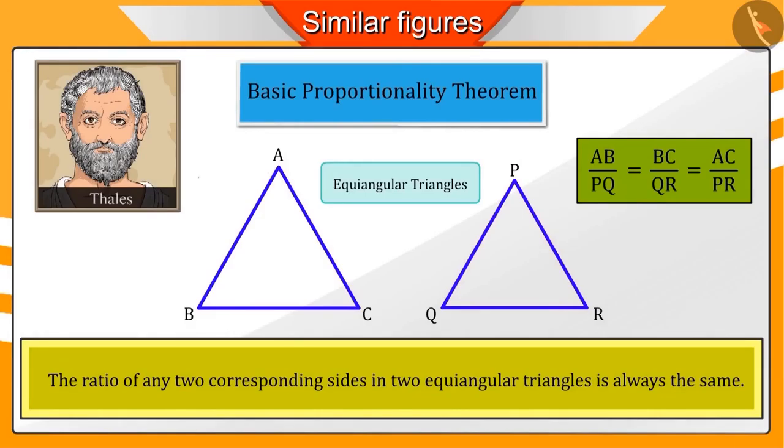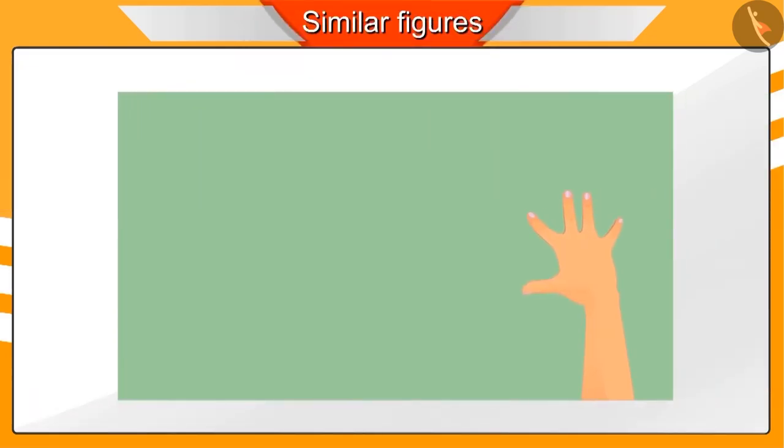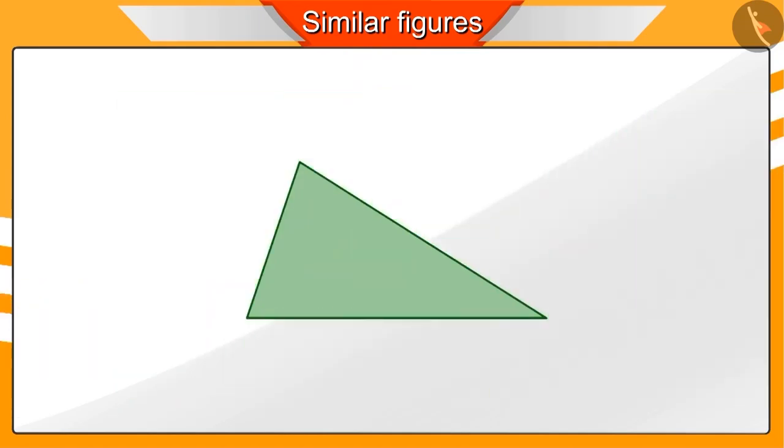Now, let's understand the Basic Proportionality Theorem with an activity. Let's take a triangle-shaped piece of paper and call it ABC.